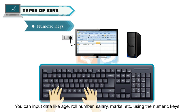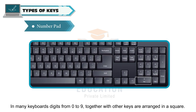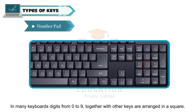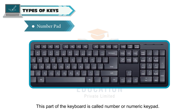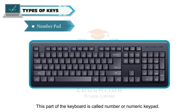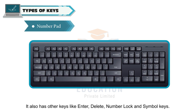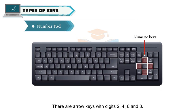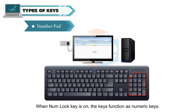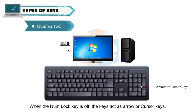In many keyboards, digits from 0 to 9 together with other keys are arranged in a square. This part of the keyboard is called the number or numeric keypad. It also has other keys like enter, delete, number lock, and symbol keys. There are arrow keys with digits 2, 4, 6, and 8. When the numlock key is on, the keys function as numeric keys. When the numlock key is off, the keys act as arrow or cursor keys.